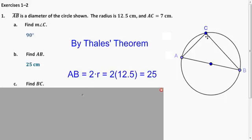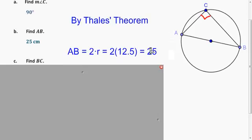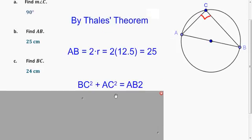Now what about BC? Well, that's a leg of a right triangle. So what theorem can we apply to figure it out? We use Pythagorean theorem, right? We know the radius is 12.5, and the diameter is 25, and we know this leg is 7. So try to solve that with Pythagorean theorem. You should get 24.